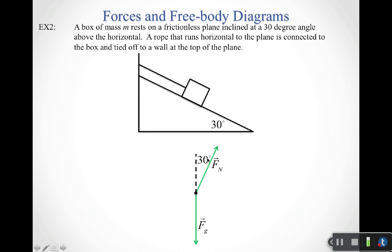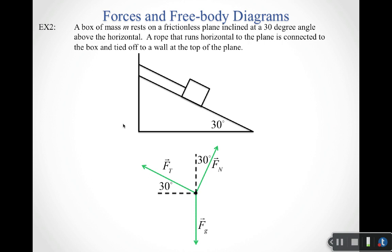Is the box in contact with the surface? Yes — it's on the inclined plane. But the plane isn't horizontal, so when I draw in the normal, it still needs to be perpendicular to the surface. Since the plane is beneath the box, the normal points up and to the right at an angle. Do we need friction? No — the plane is frictionless. Is there a rope? Yes — it runs horizontal to the plane, which at 30 degrees means the tension pulls at 30 degrees above the horizontal.